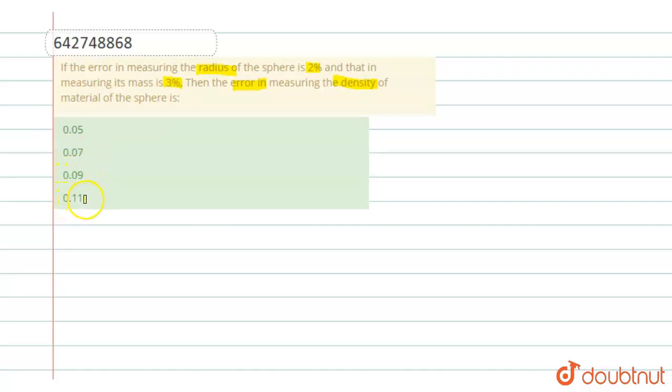So in this question we have to find the error in measuring the density of the material of the sphere. Basically, we find the error in density. So we have the values: del r by r is equal to 2 percent, and error in mass, del m by m, is equal to 3 percent. And we have to find the error in density, del rho by rho.